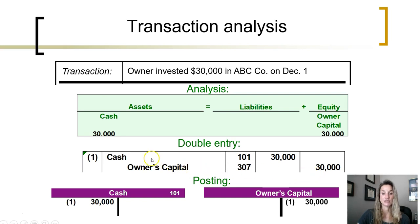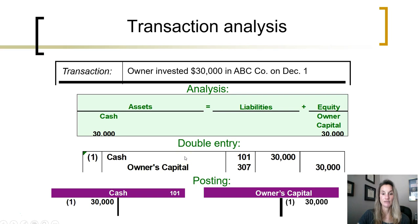This journal entry is complete. The account being debited is listed first, followed by the account or accounts being credited, indented to differentiate from the debits. The total dollar amount of debits equals the total dollar amount of credits. There is at least one account debited and at least one account credited. It's a good journal entry.